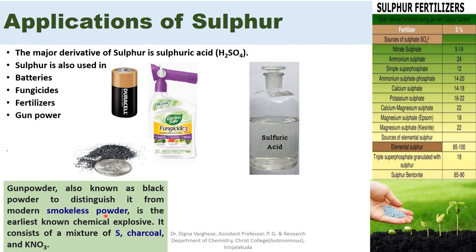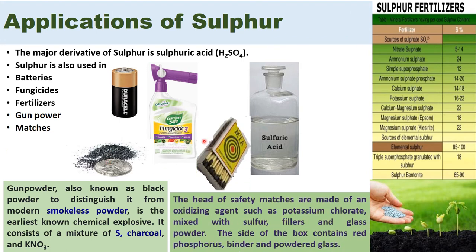Gunpowder, also known as black powder, is the earliest known chemical explosive and consists of sulphur, charcoal, and potassium nitrate. The heads of safety matches are made of an oxidizing agent such as potassium chlorate mixed with sulphur, fillers, and glass powder. The side of the box contains red phosphorus, binder, and powdered glass. The match head also contains tetraphosphorus trisulphide, and the phosphorus catches fire and ignites the wood.